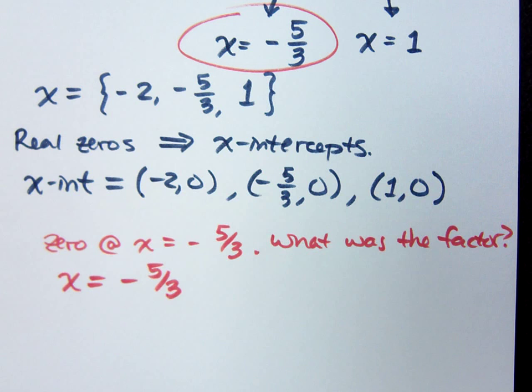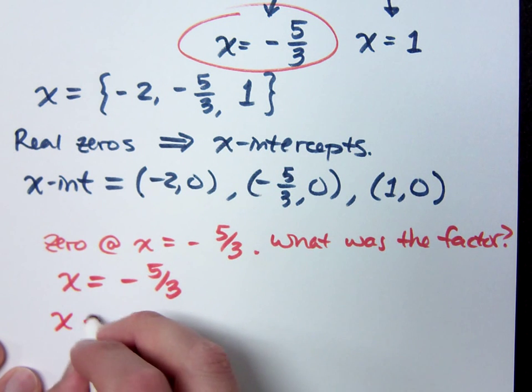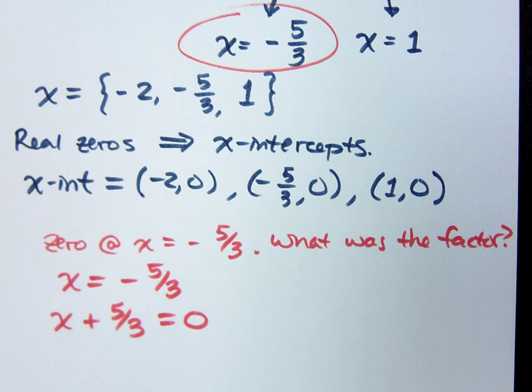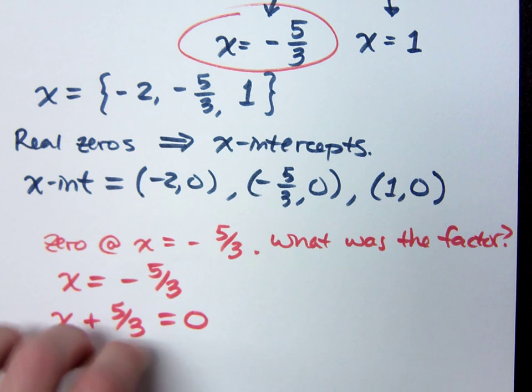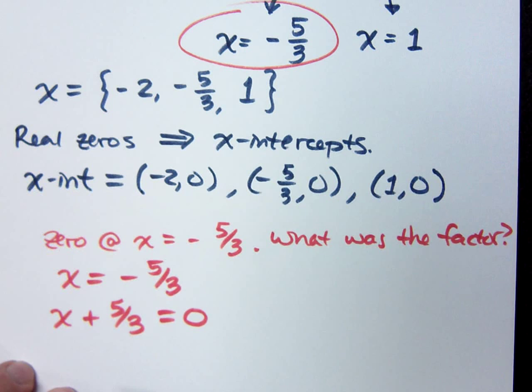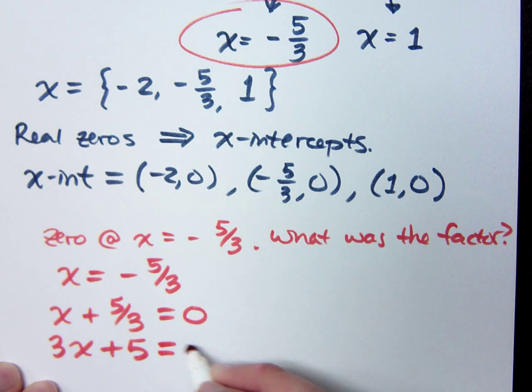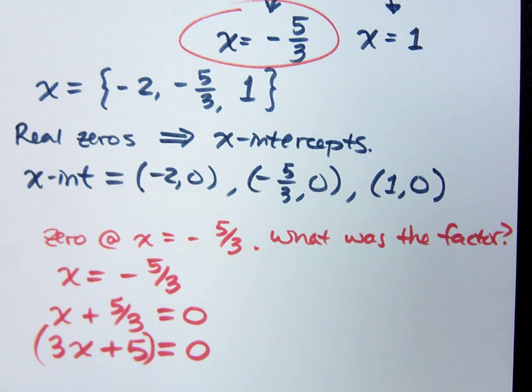Right. When we get these zeros, you get the zeros from setting factors equal to what? Zero. So if I go backwards here, that means that x plus 5 thirds equals 0. Now, is x plus 5 thirds a factor? Could it be a factor of my original function? It could be. But we typically don't see factors that look like this, do we? If you clear out these fractions, if you multiply everything times 3, what do you have? You get 3x plus 5 is equal to 0, so that's where your factor comes from. It's the 3x plus 5.